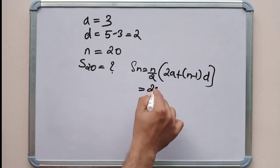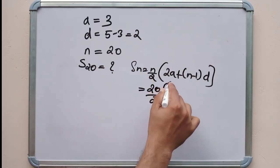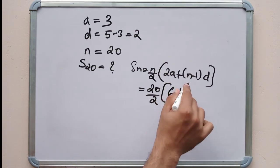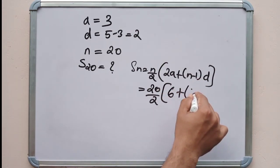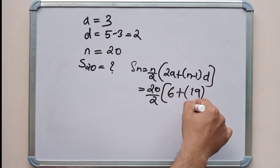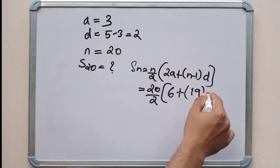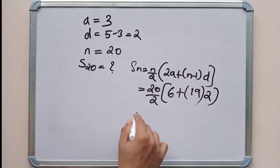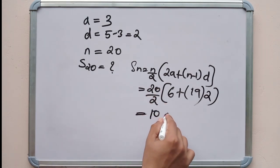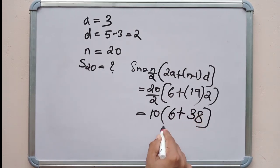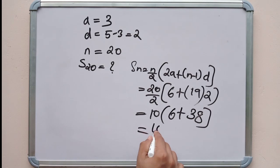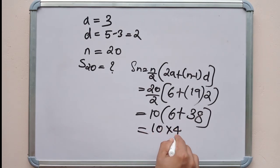Substituting: 20 by 2 into (2 into 3 plus (20 minus 1) into 2) equals 10 into (6 plus 19 into 2) equals 10 into (6 plus 38) equals 10 into 44, which equals 440.